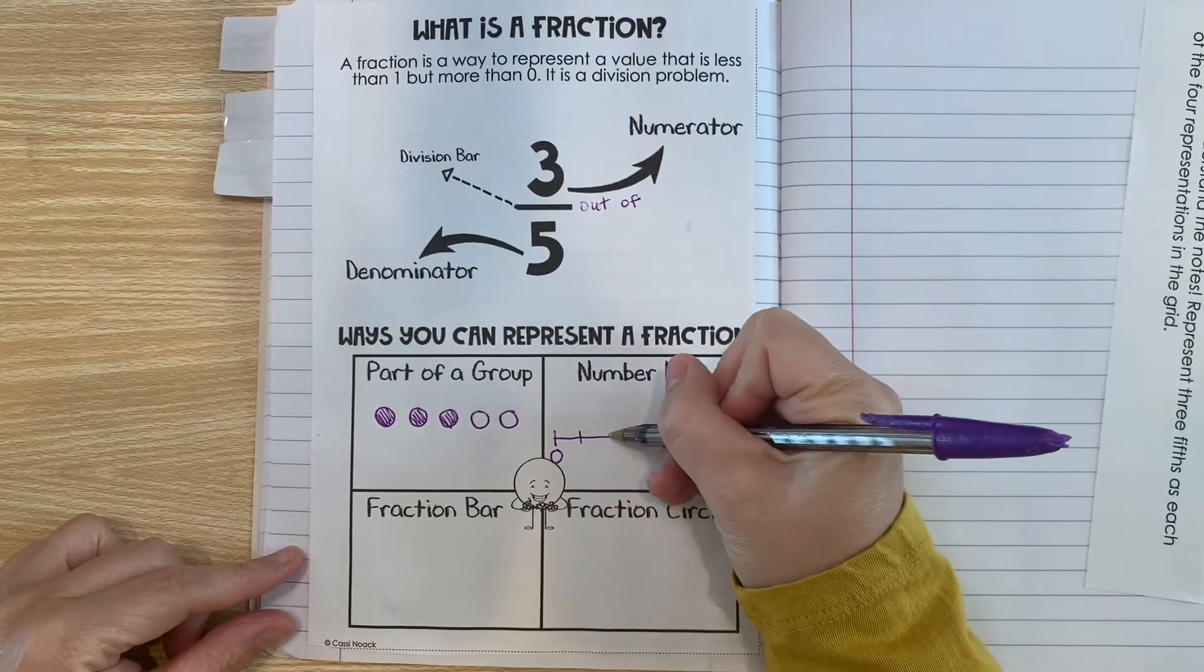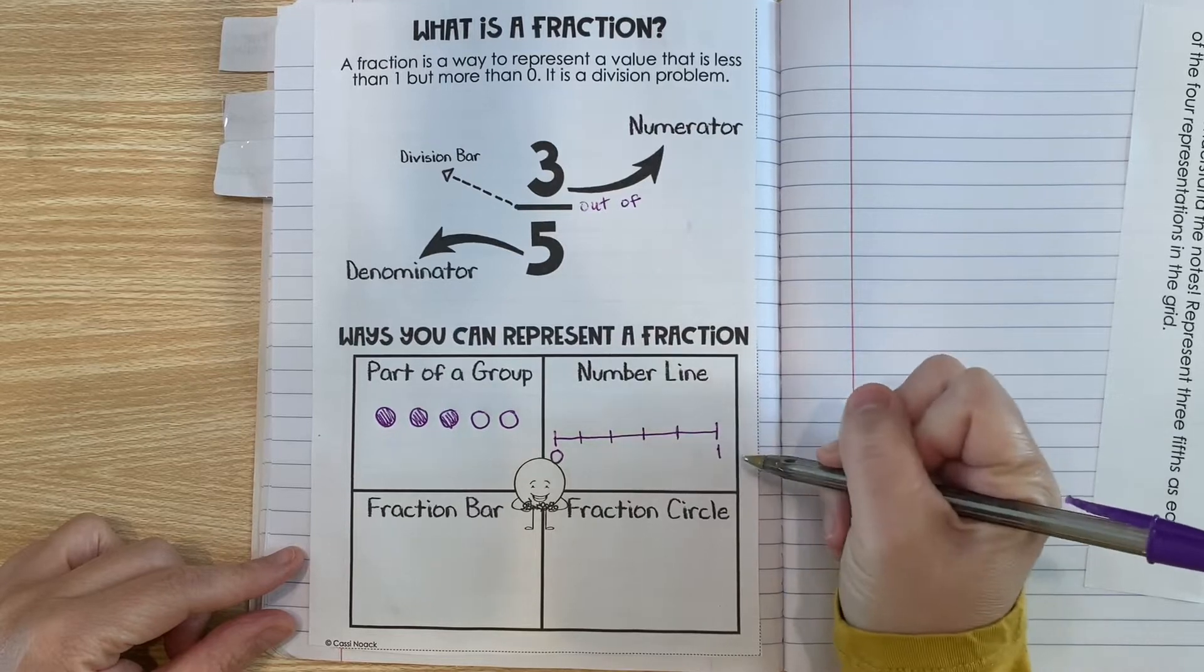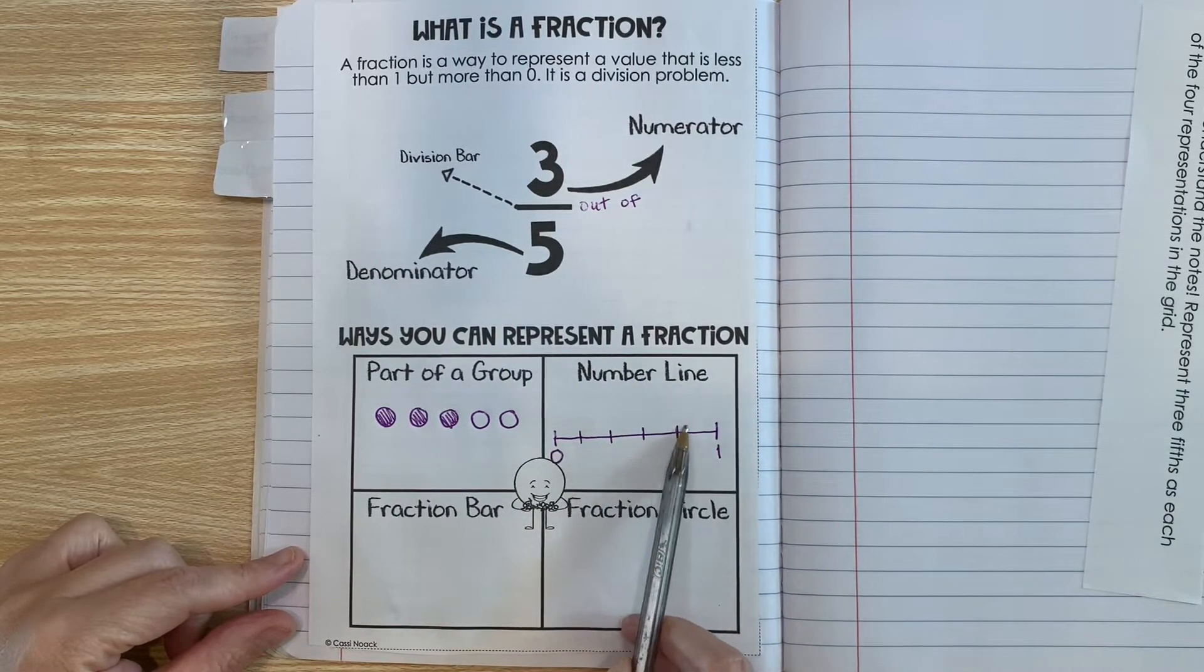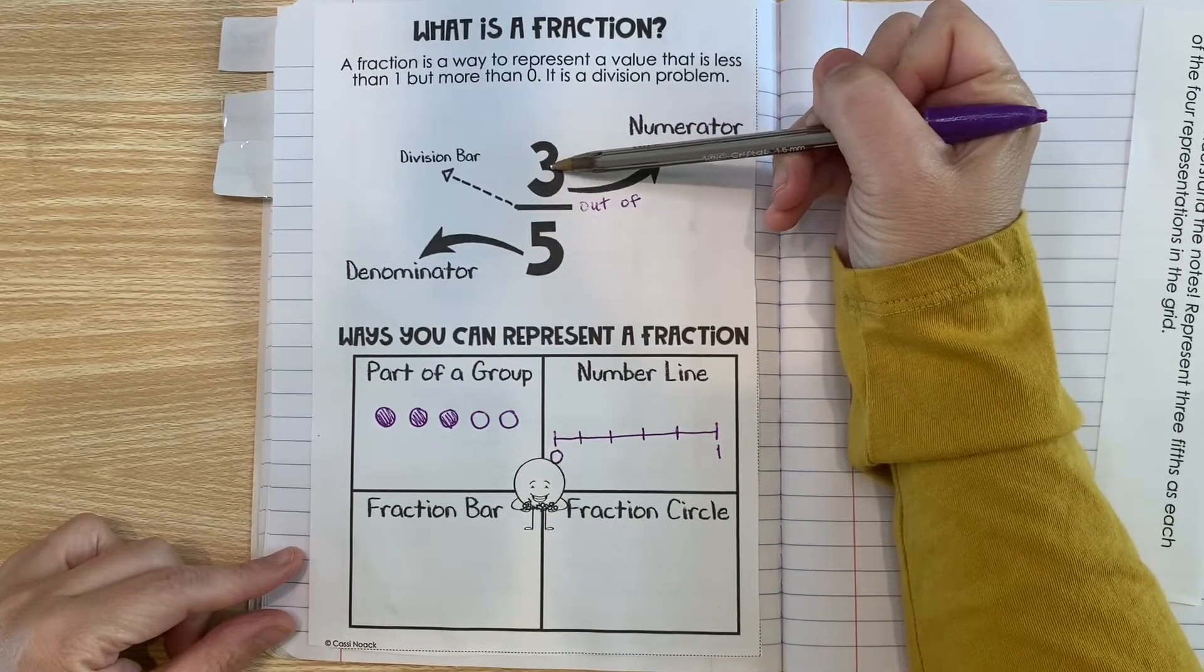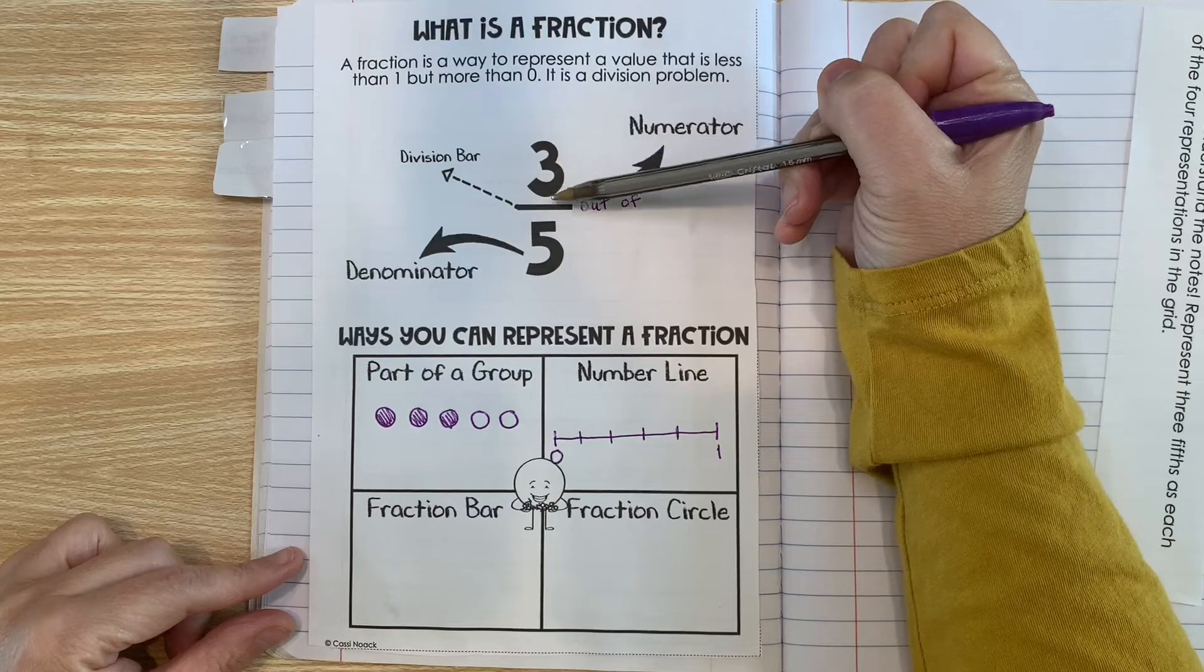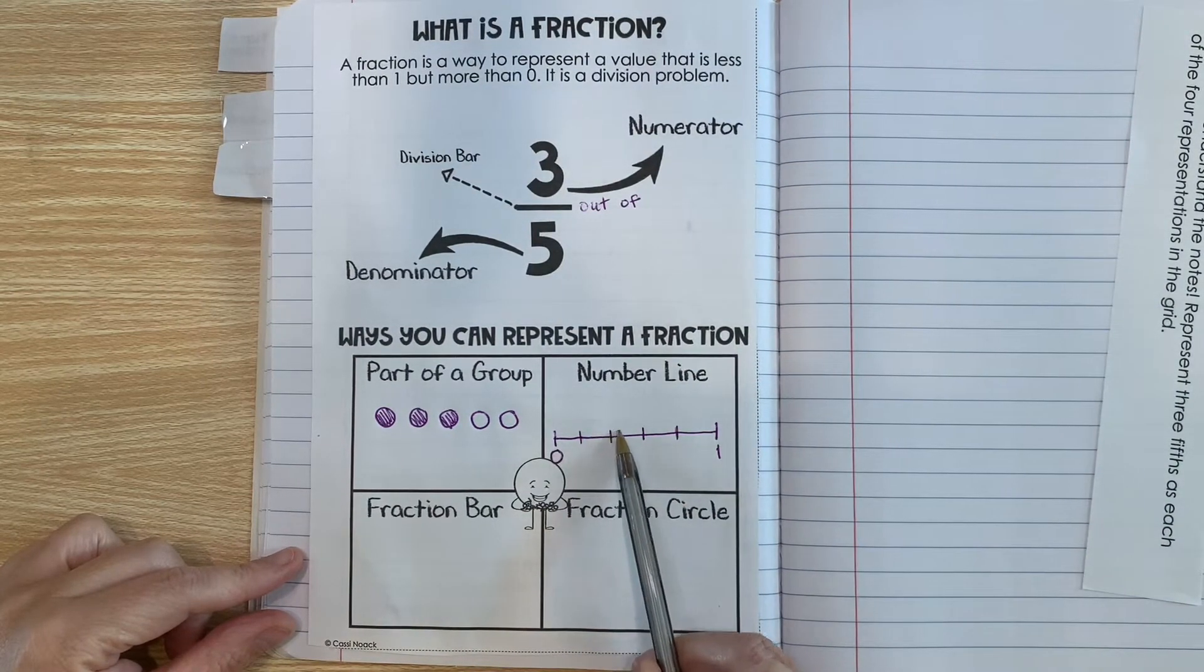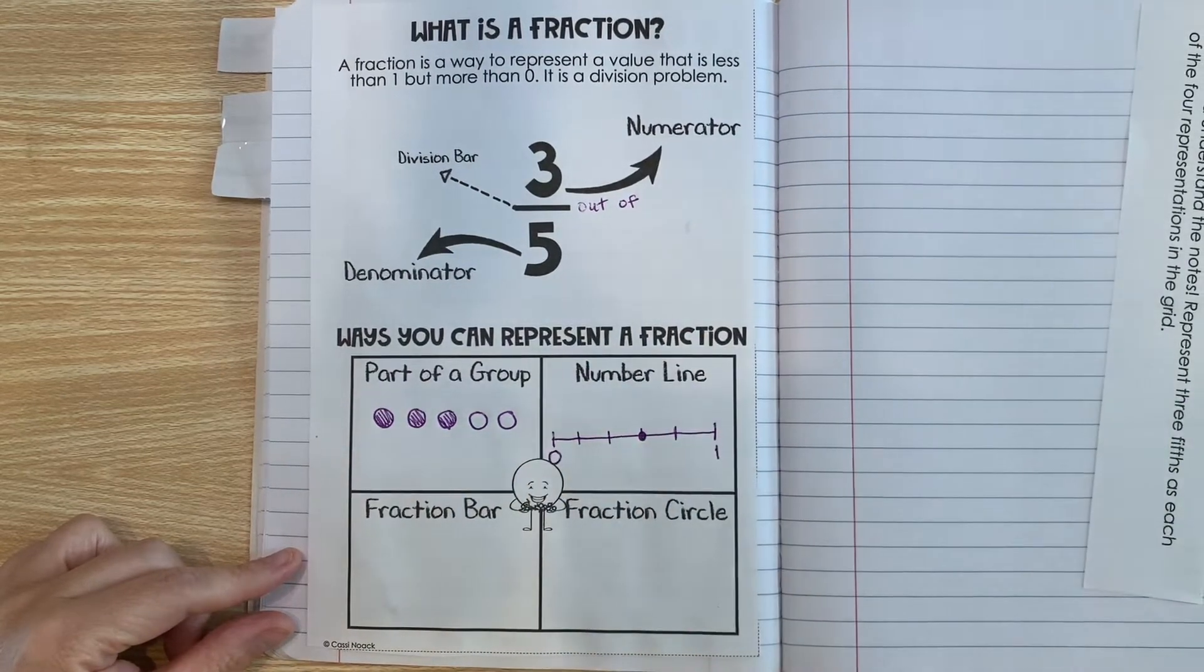So one, two, three, four, five. So if you look, we have five parts. One, two, three, four, five. The three represents how far we're going to count. So we're going to count three out of the five. So one, two, three. So three fifths on a number line would look like that.